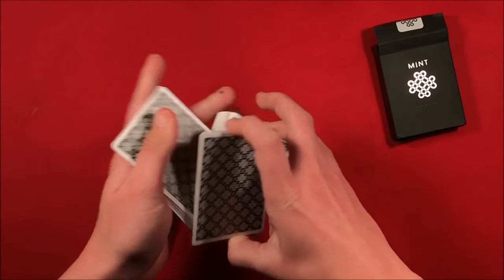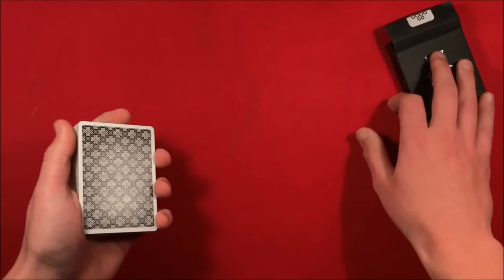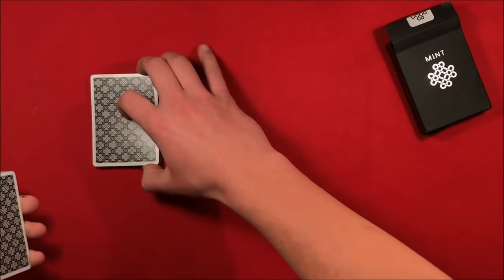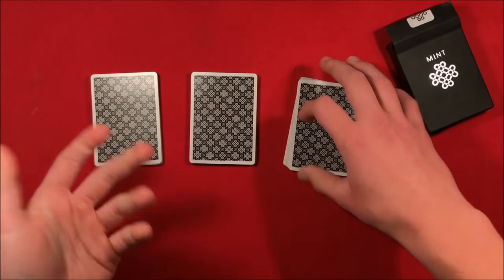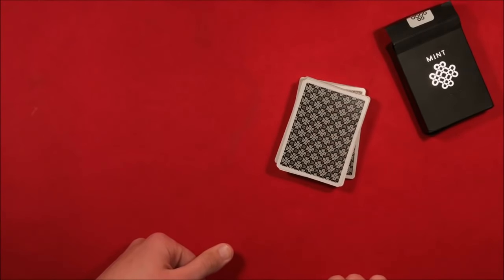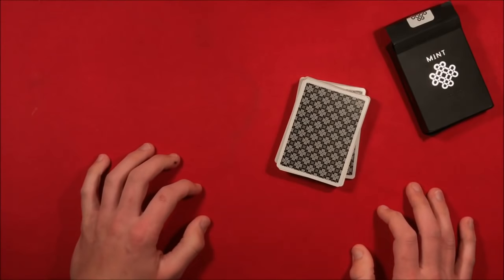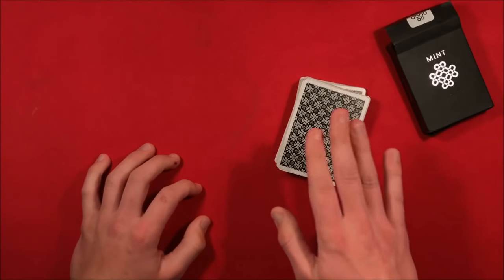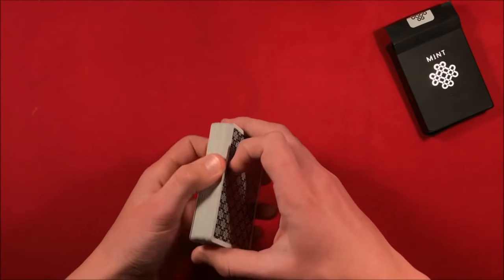From here what you want to do is you can do a couple of fake cuts or something. I'm going to leave the link so you guys can learn that. Then you can also take the cards and just kind of break it off into groups, whatever you want to do in order to not mix up the deck but kind of give it the illusion that the cards are indeed getting mixed up.